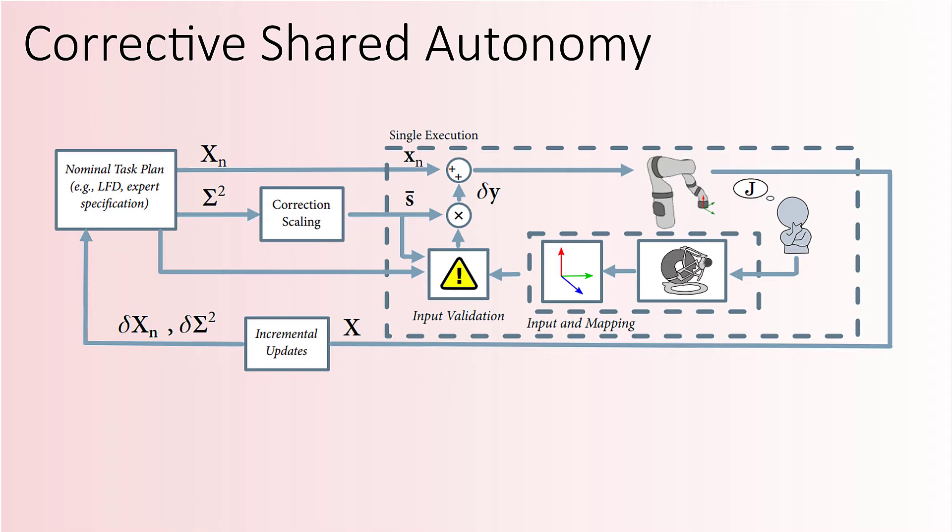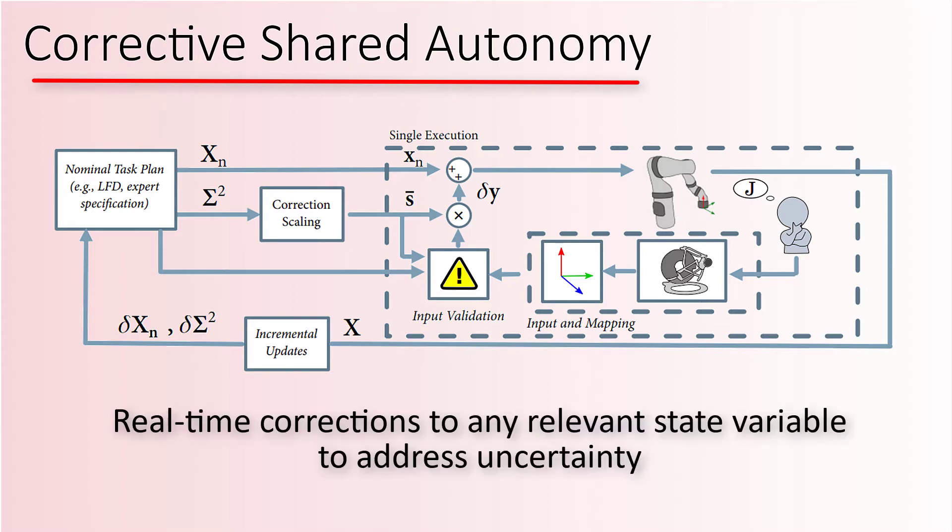In this work, we present a method for addressing variability in tasks called corrective shared autonomy. In this method, users provide real-time corrections to any relevant robot state variable to address uncertainty in the task.